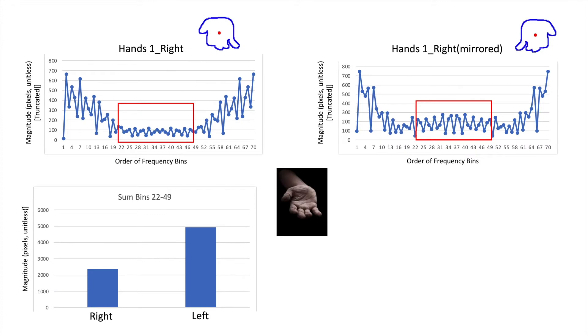Just for illustrative purposes, we then re-plot the frequency plots as line graphs, so it becomes more obvious that the middle section outlined in red has larger values for the mirrored hand compared to the original hand. The bar graph at the bottom left shows the sum values within the red boxes.